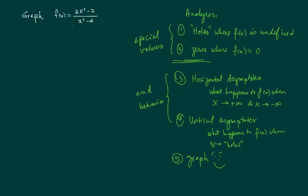The first two steps is finding out where the special values are. Obviously, since this is a rational fraction, when the denominator equals zero, we call those holes, where f becomes undefined because you can't divide by zero. And also, we're looking for where the zeros are when f equals zero. Since it's a fraction, when the numerator equals zero, the function itself gets to be zero.